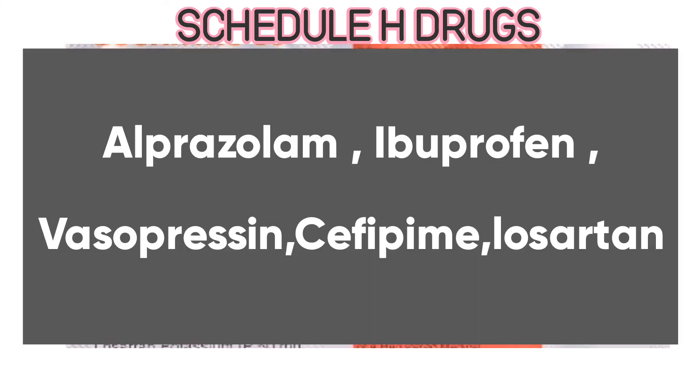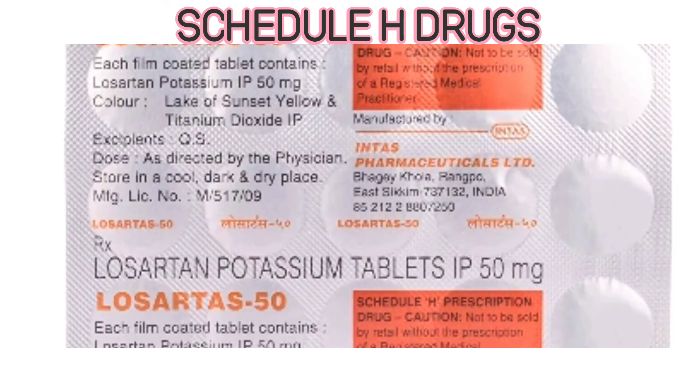Examples of Schedule H drugs include alprazolam, ibuprofen, vasopressin, cefepime, losartan, etc.